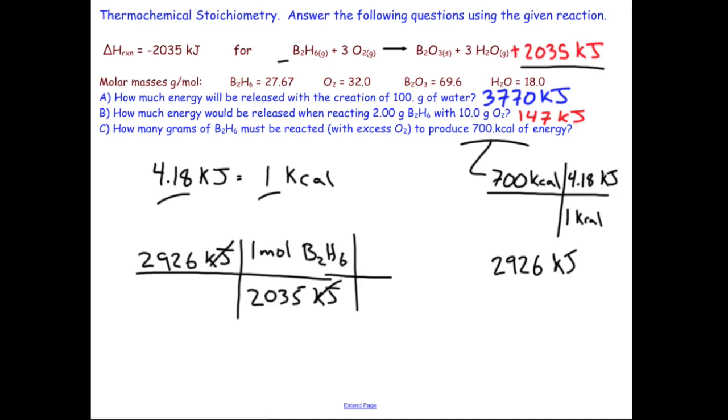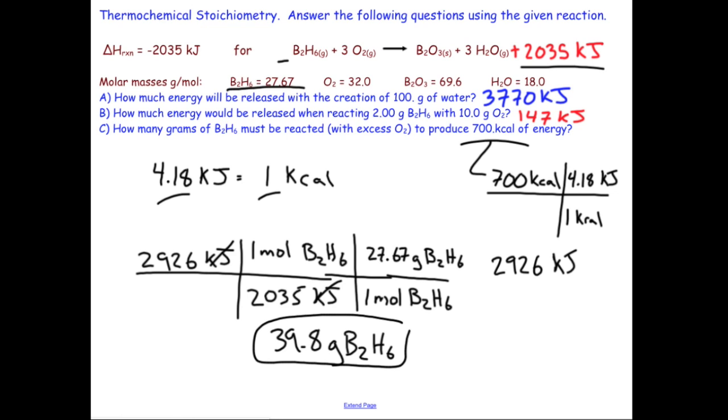So I just need to come up here and use this conversion again. Paying attention to my units, letting them tell me numerator or denominator. 1 mole B2H6 for 27.67 grams B2H6. And in doing that calculation I find 39.8 grams B2H6. Final answer for part C. And we are done with the problem.